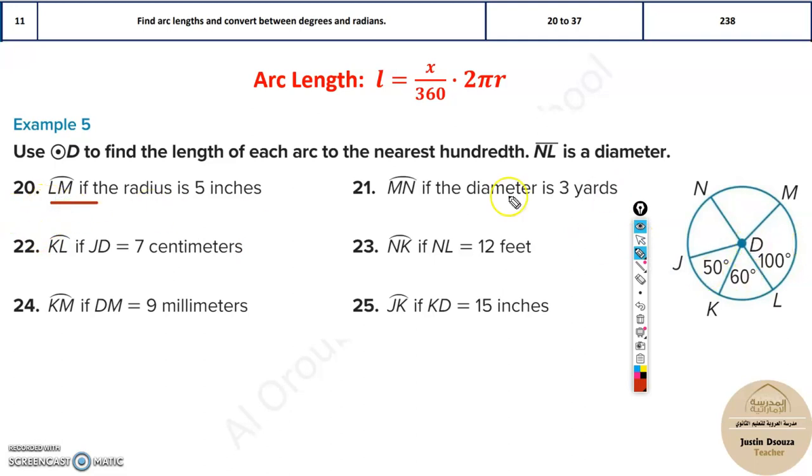Now, before that let's see this. They have told circle D and NL is the diameter. Say this is the diameter. So if this is the diameter, it's a straight line. See, these are not straight lines, they're all slanted. This is a particular straight line. Now let's solve for LM, the arc LM.